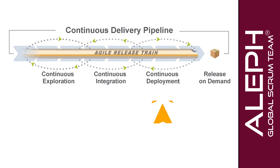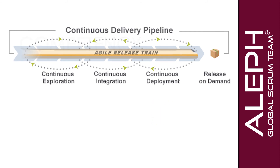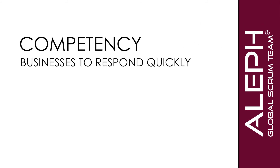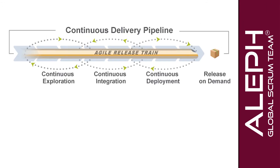Continuous deployment is a process that takes validated features and proceeds to deploy them to the production environment where they can be ready for release. This is a critical competency and allows businesses to respond quickly and effectively to market change.